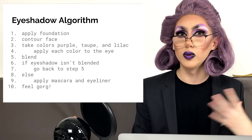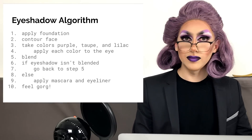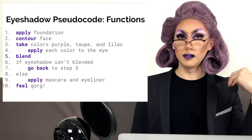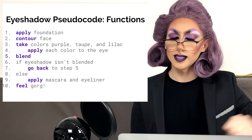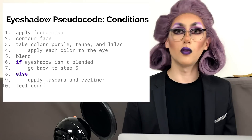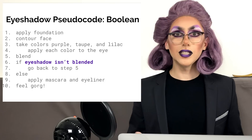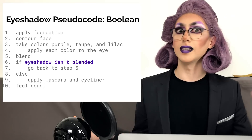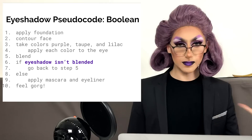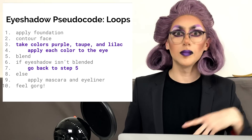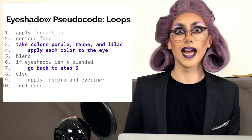So in this algorithm we have concepts that you will see when writing code and solving computer science problems. We have functions — these are just actions: apply, contour, blend. These are abstractions — you'll learn how to blend, you'll learn how to contour, and then you can just say 'contour.' We also have conditions, which are just like a fork in the road. If my eyeshadow is blended, then I don't need to blend it anymore; if it isn't, I need to keep blending it. The conditions being checked are called Boolean expressions — these return either true or false. Is my eyeshadow blended? Either yes or no. Finally, we've got loops, which just say do something over and over again. We're going to dive into our first ever programming language in this class, and it's called Scratch.